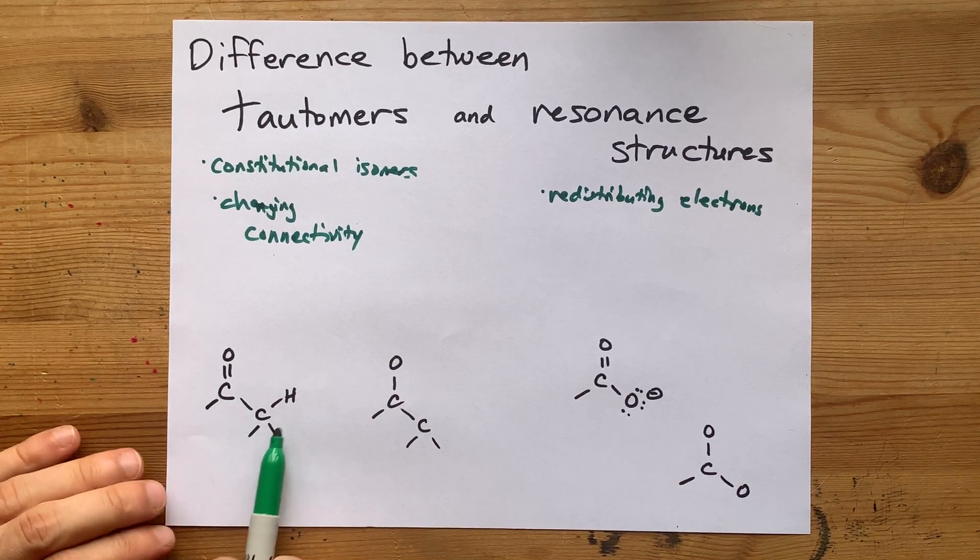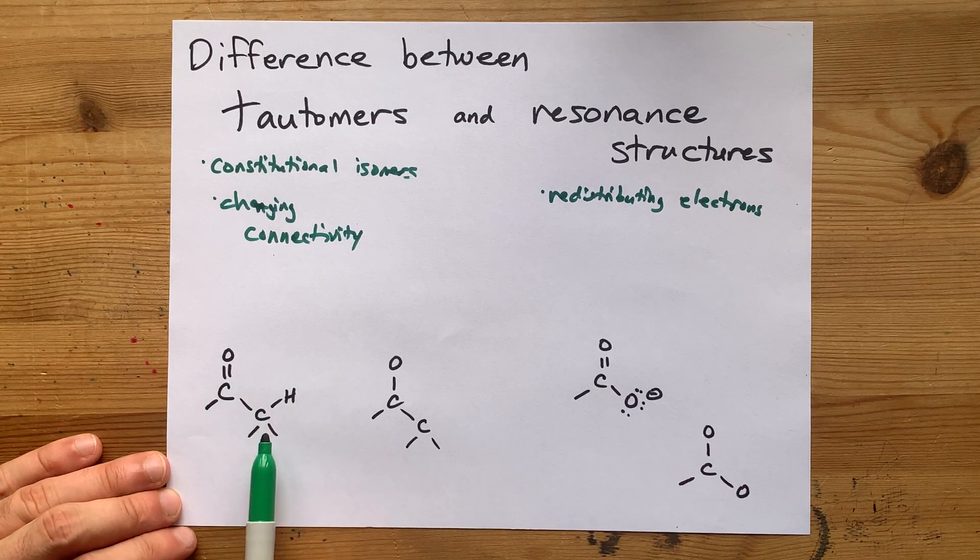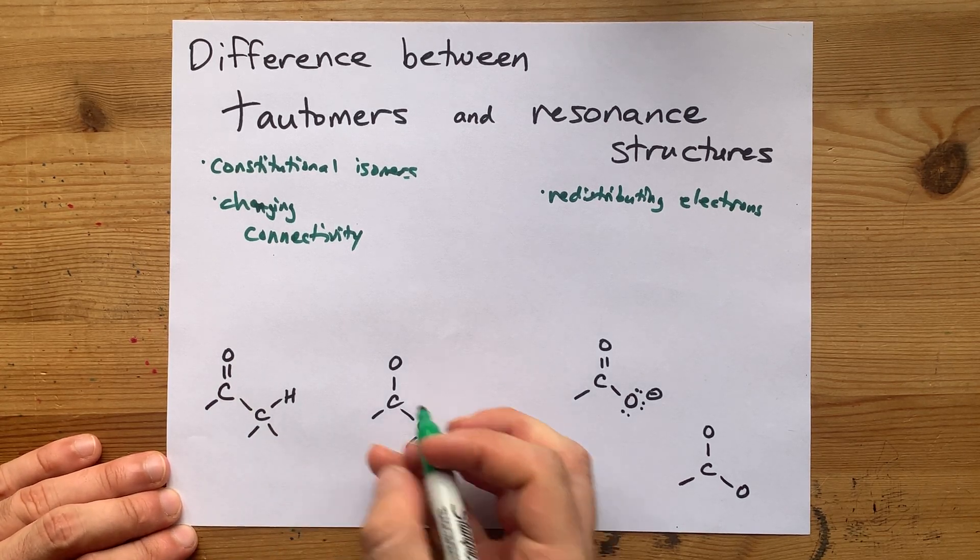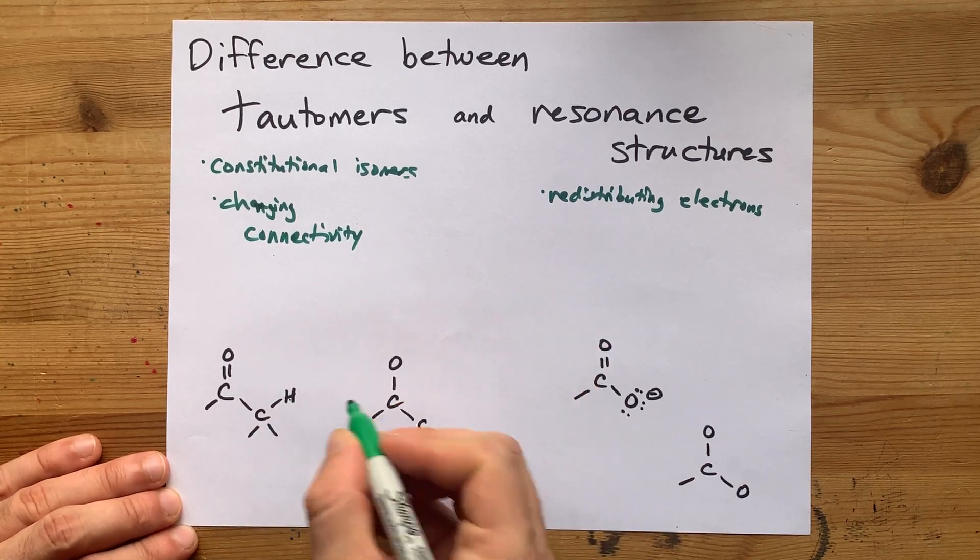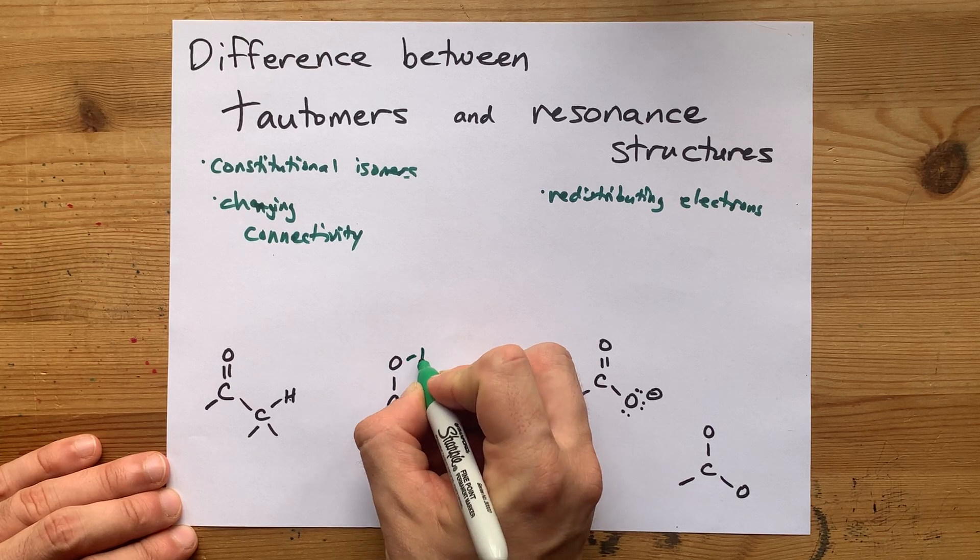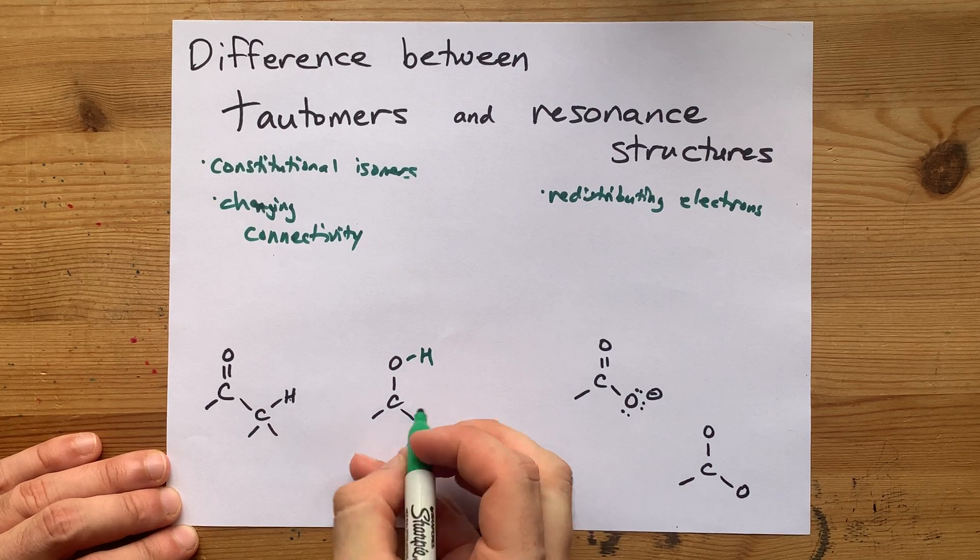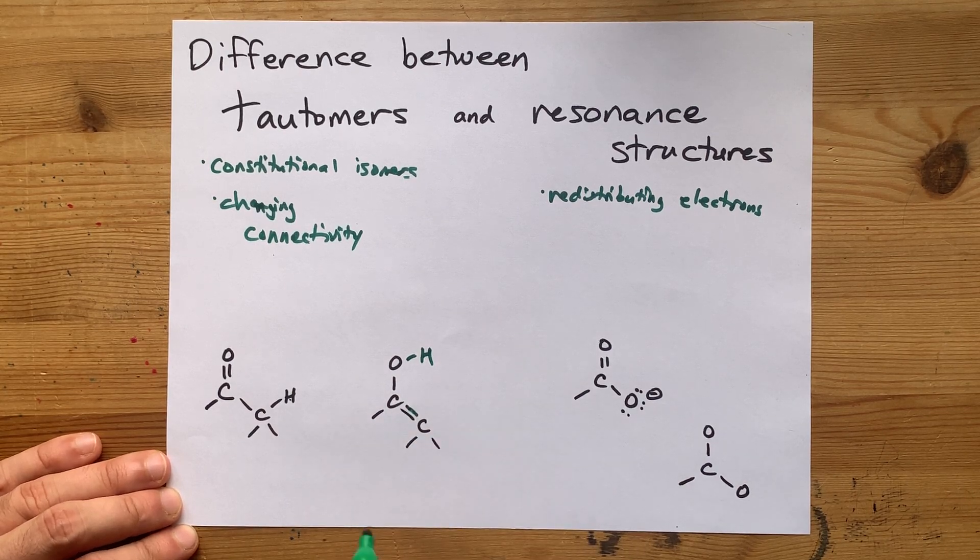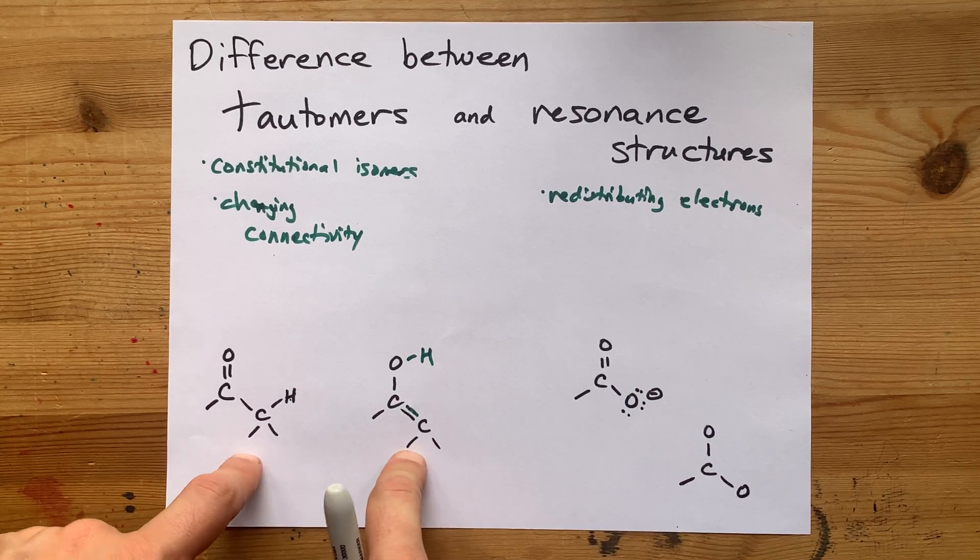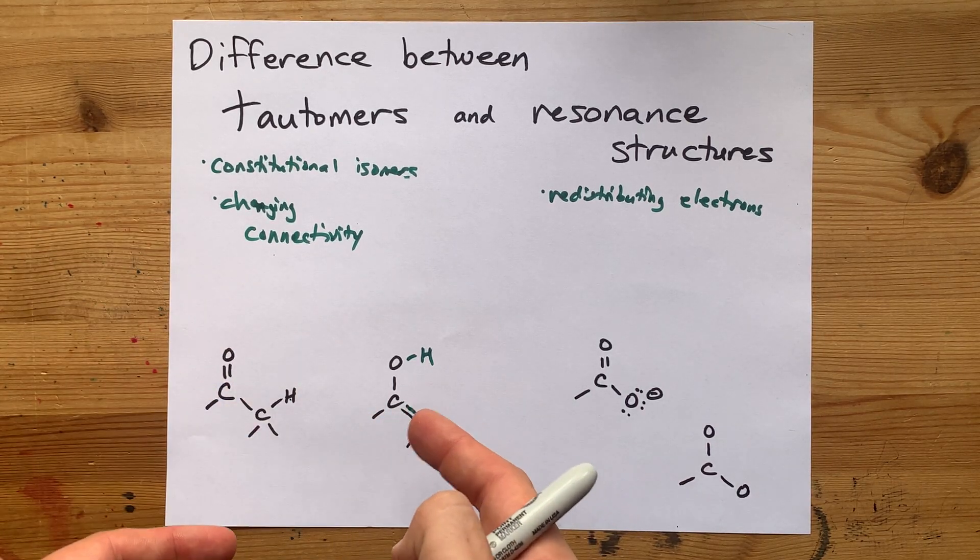This is a fully valid structural diagram. I could have R groups or Hs here. Now, that H can also be found some of the time attached to this O. That double bond would have had to break to make this happen. It actually displaces to here. This is another valid structural diagram, and these two compounds are found rapidly interchanging to become each other.